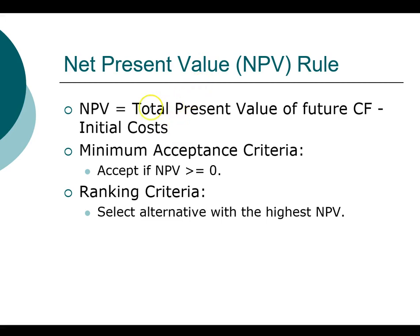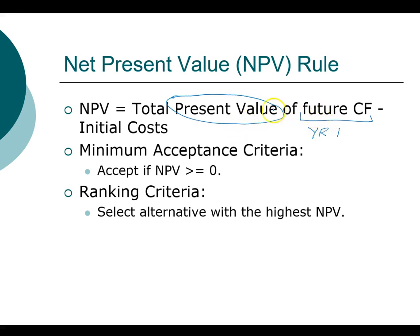The definition of net present value is the total present value of future cash flow minus the initial cost. Future cash flow means cash flow starting in year one onward — year one, year two, year three, and on. The first step is identifying this future cash flow, then computing the present value using the discount rate. Once we have the cash flows and the discount rate, we can compute the present value, which determines the value of our investment. We then compare that value to the initial cost, which is the cost at year zero.